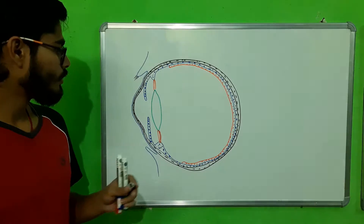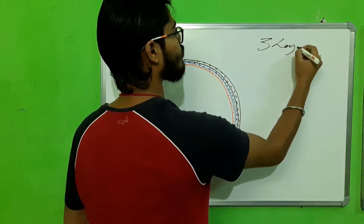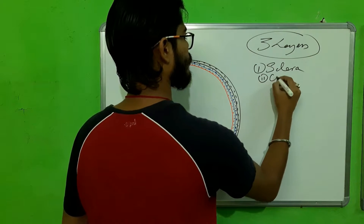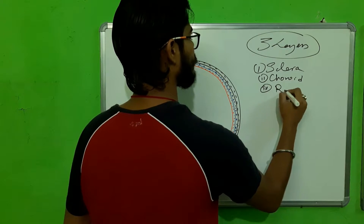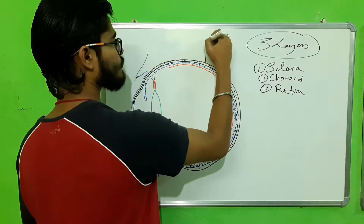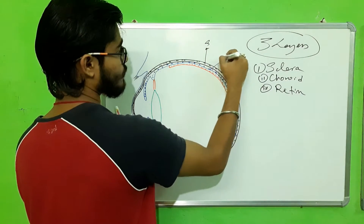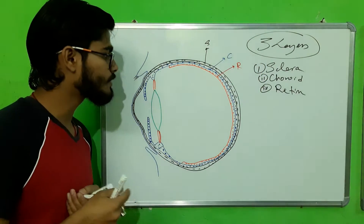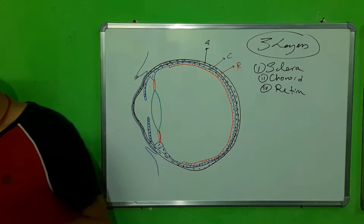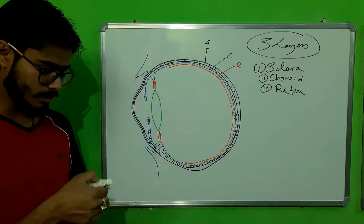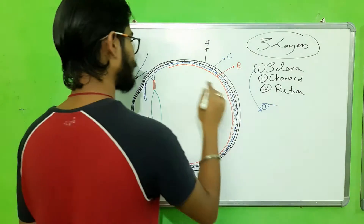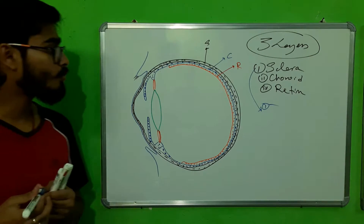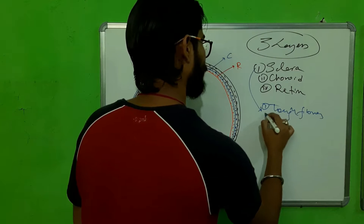Now let's talk about the proper eyeball. There are in total three layers of the eyeball, from outside to inside: sclera, choroid, and retina. The sclera is the outermost layer — a tough fibrous layer meant for protection, white in color.